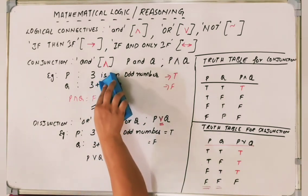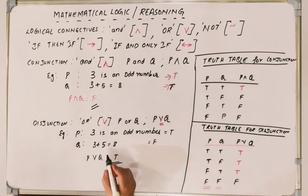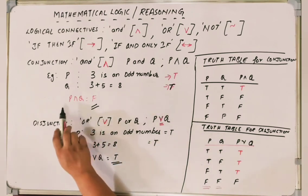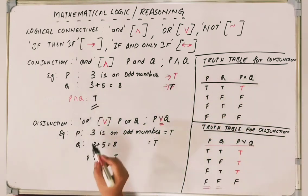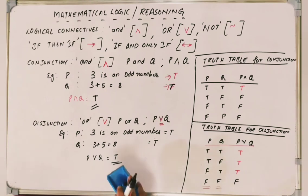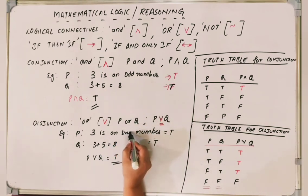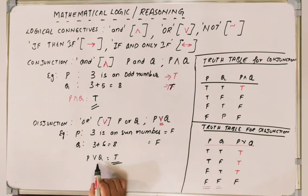If we modify Q to '3 + 5 = 8', this becomes true. So P disjunct Q becomes true because true OR true is true. If we change P to '3 is an even number' (false) and Q to '3 + 6 = 8' (false), then P disjunct Q is false because two false statements result in false.